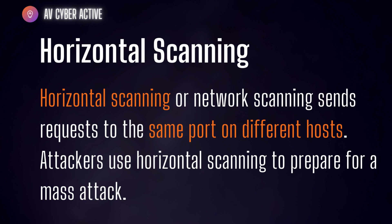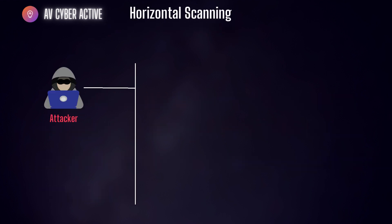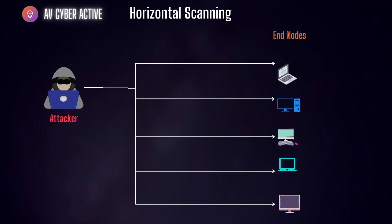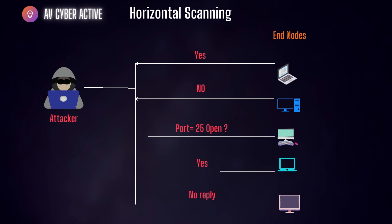Attackers use horizontal scanning to prepare for a mass attack. To give you a visual demonstration, the attacker will use a tool in their arsenal and send queries to a large group of computers but on the same port — for example, port 25, which is used for SMTP mail relay. Depending on the firewall configuration on the host, the attacker will get a reply back, and this is how an attacker determines if a particular port is open on a host.